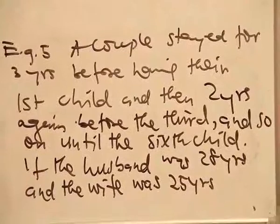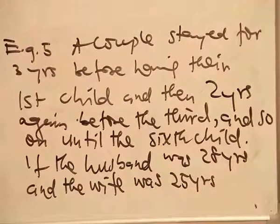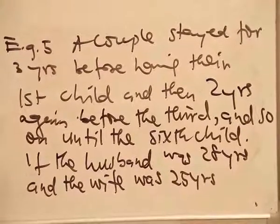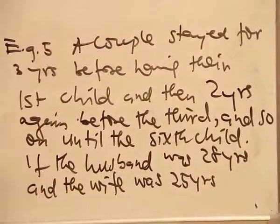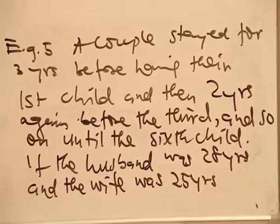Example 5. A couple stayed for 3 years before having their first child and then 2 years again before the third and so on until the sixth child.